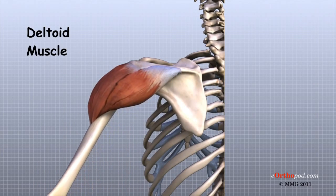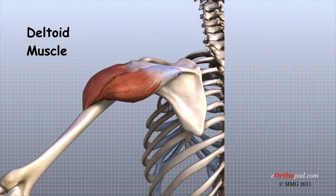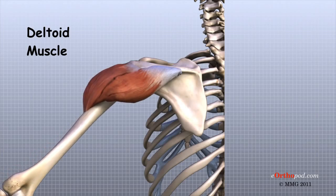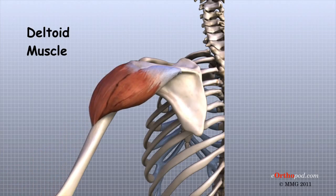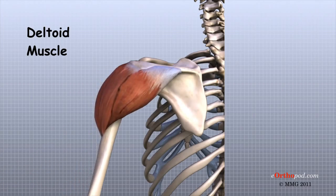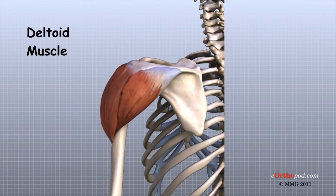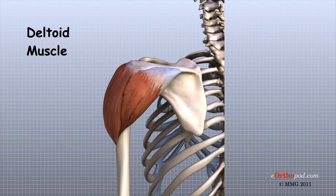The large deltoid muscle forms the outer layer of shoulder muscle. The deltoid is the largest, strongest muscle of the shoulder and provides the power to lift the arm once the arm is away from the side.